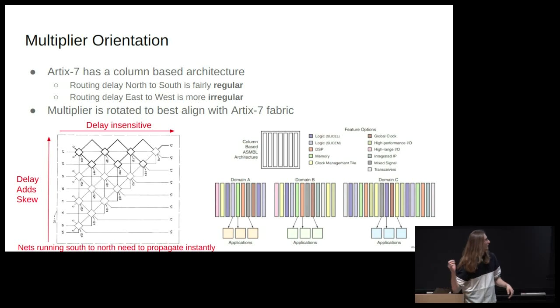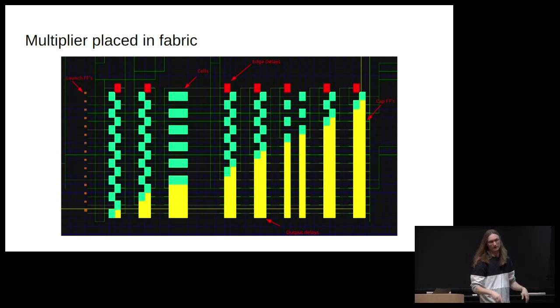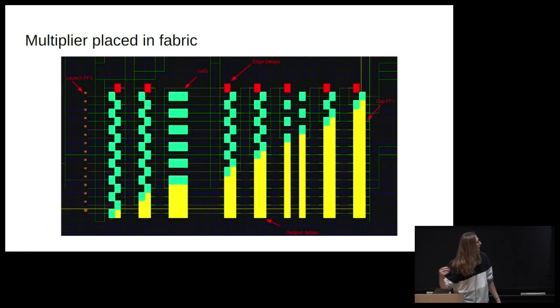So this is it placed in the fabric with the RPM constraints. I've got my launch flip-flops on the left. The capture flip-flops are kind of hidden by the view, but they're sitting in the last layer of slices right on the output. I have some edge delays up top, which are the little part at the top where it's skipping layers. I need to delay those as well. And then the yellow region is just buffers because I need to buffer out the first partial products computed instantly in that first cell. And then I need to delay it to stay in phase with the rest of the multiplier. And the green is, of course, the cells themselves.